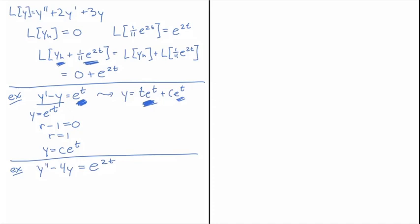Let's look at y double prime minus 4y equals e to the 2t. First, step one, we're looking for yh, the homogeneous solution. We get r squared minus four equals zero, which gives us r equals plus and minus two. So the homogeneous solution yh of t equals c1 e to the 2t plus c2 e to the minus 2t.